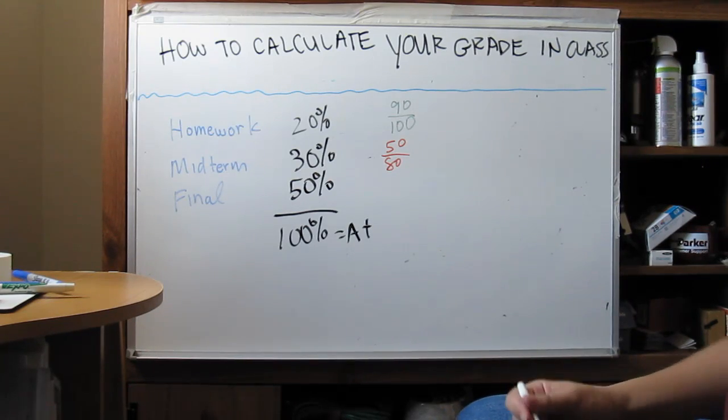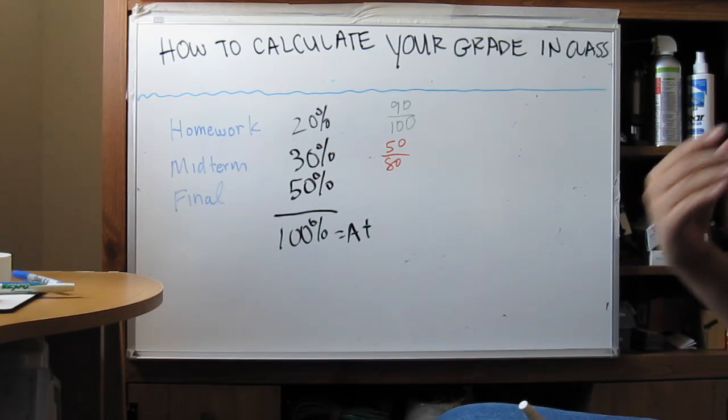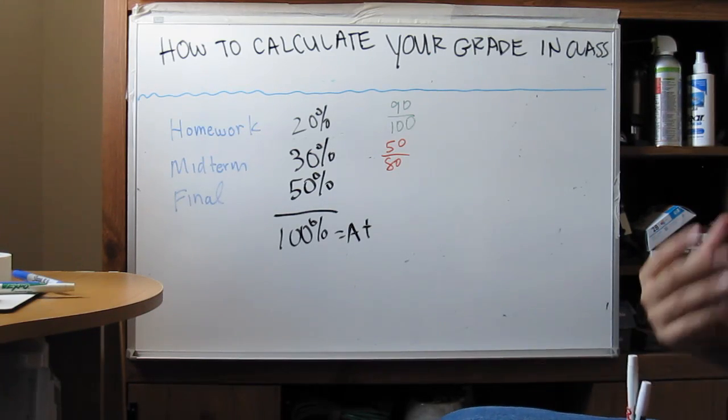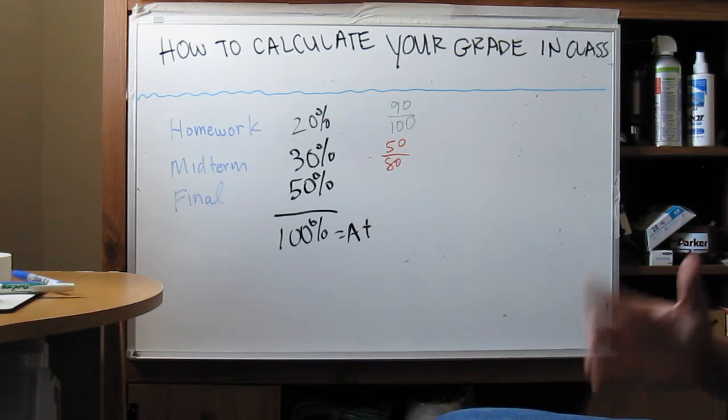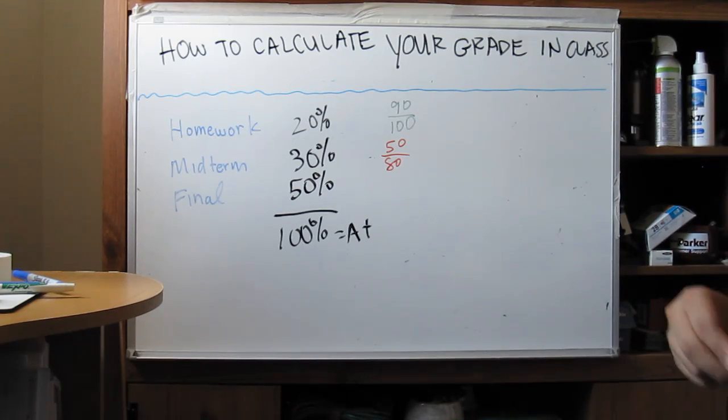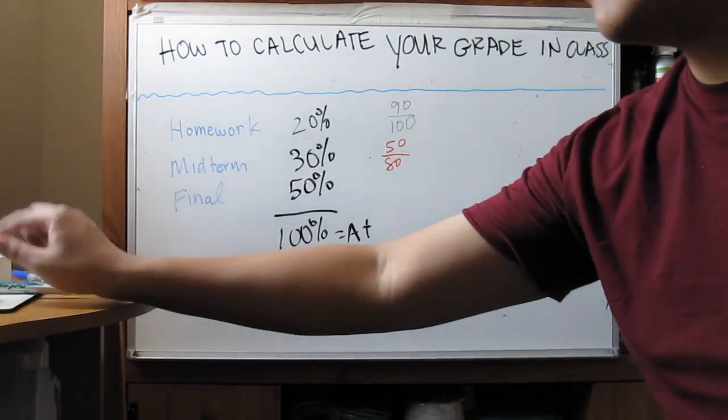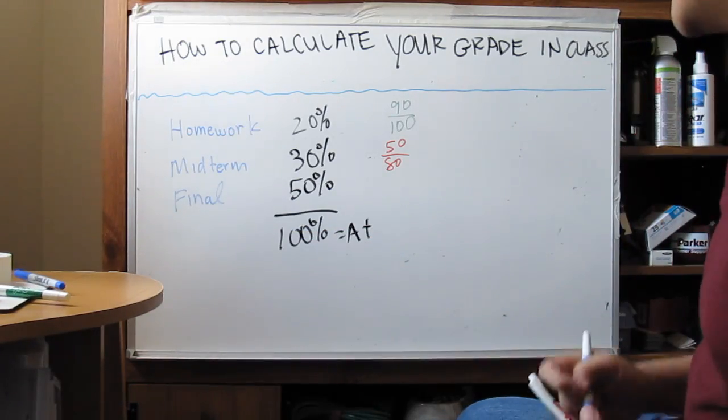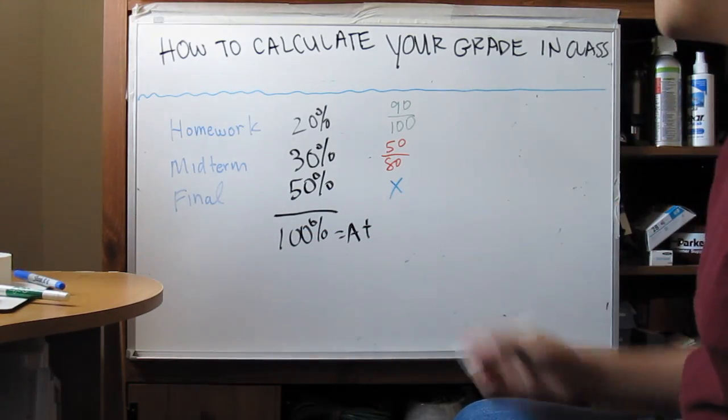Now at this point, you're thinking, well I only have a final left, will I be able to get a good grade on the final to still get an A in the class? And that's sort of the situation that you're in. So to figure this out, we're going to call the final an x variable. We don't know what that value is.